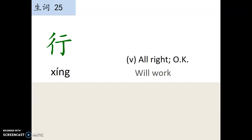欢迎来到邵老师的中文课。今天我们继续说第六课 Part 1 的生词。第一个生词：行。行 means okay, alright, well, it worked.